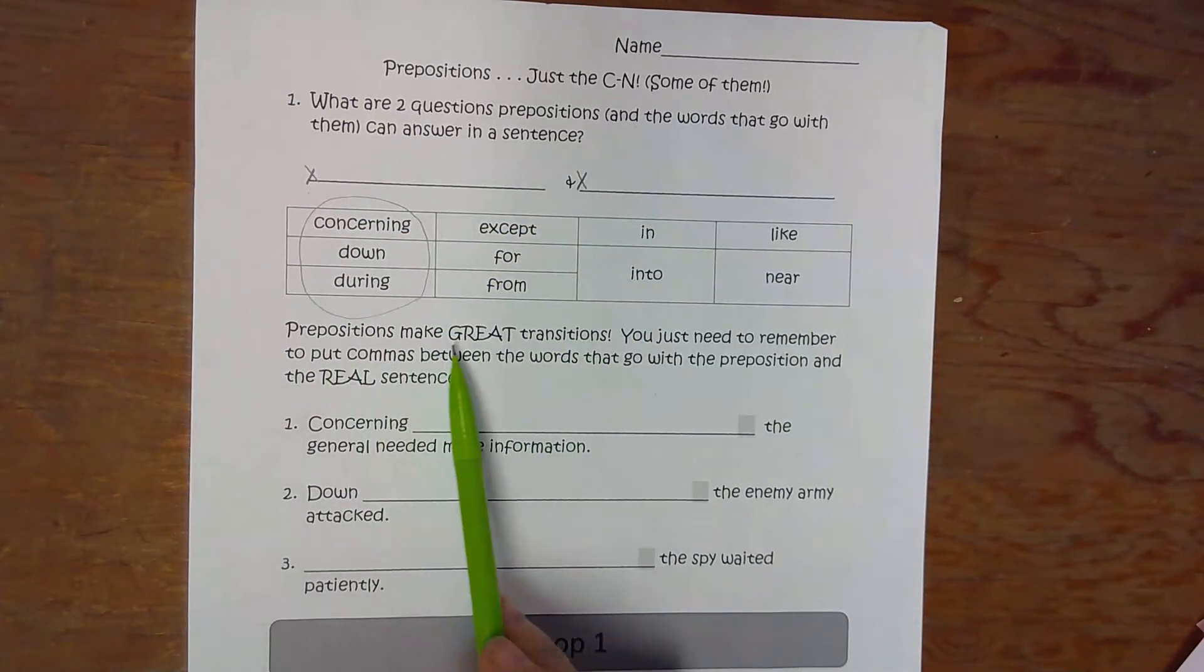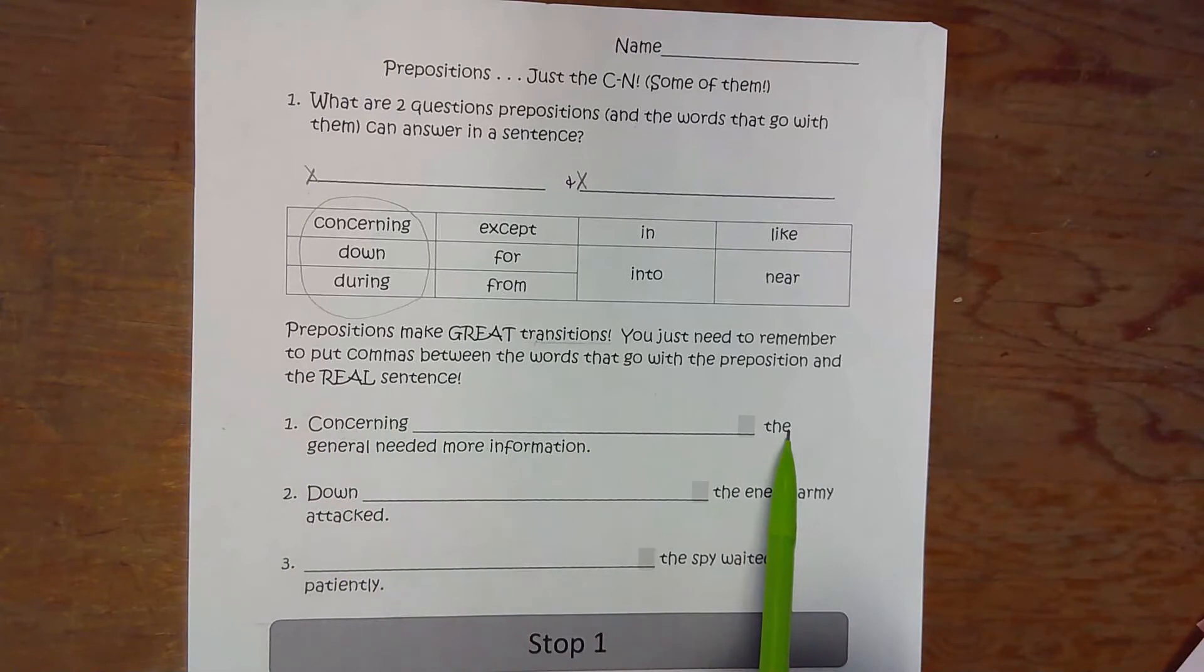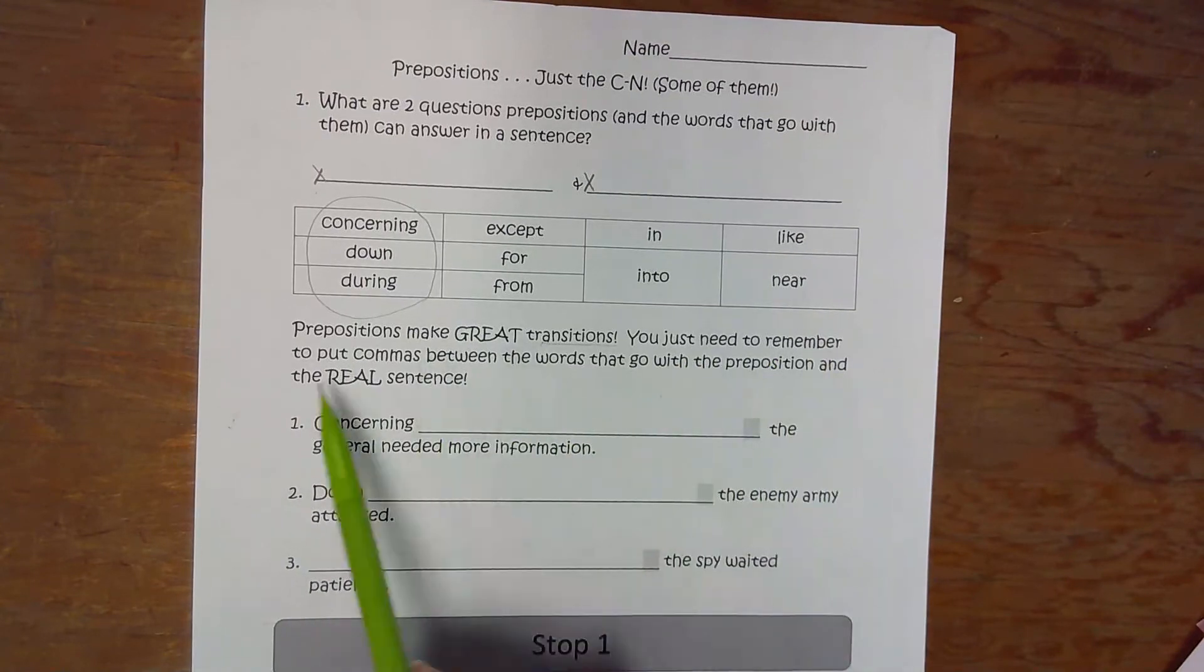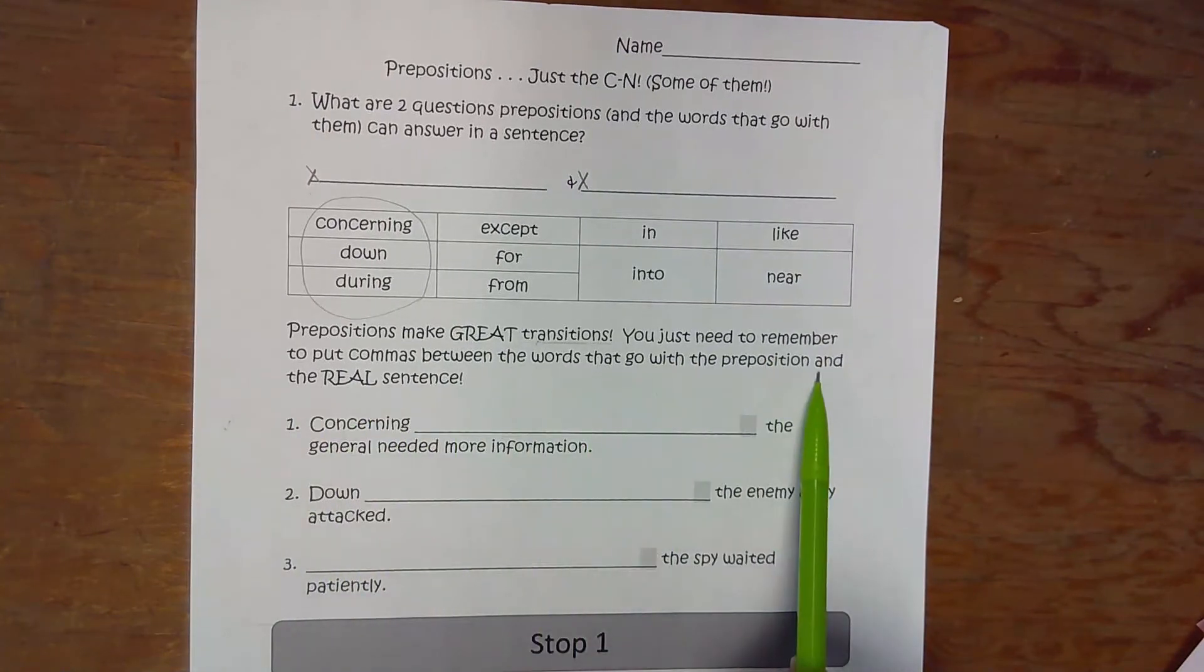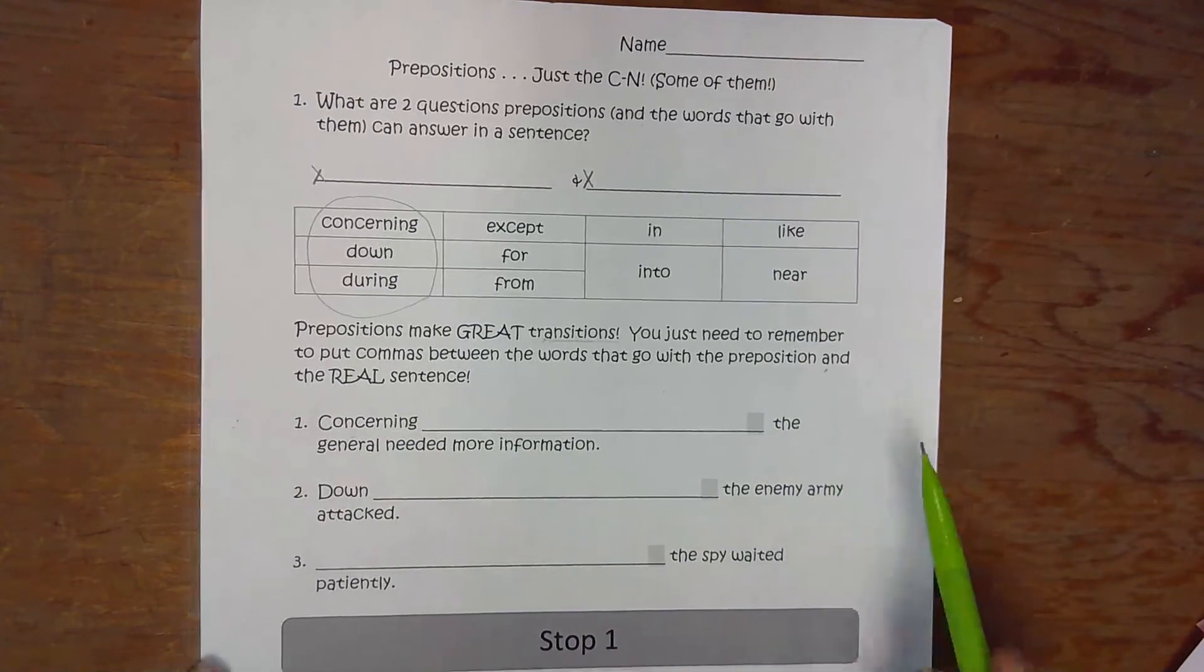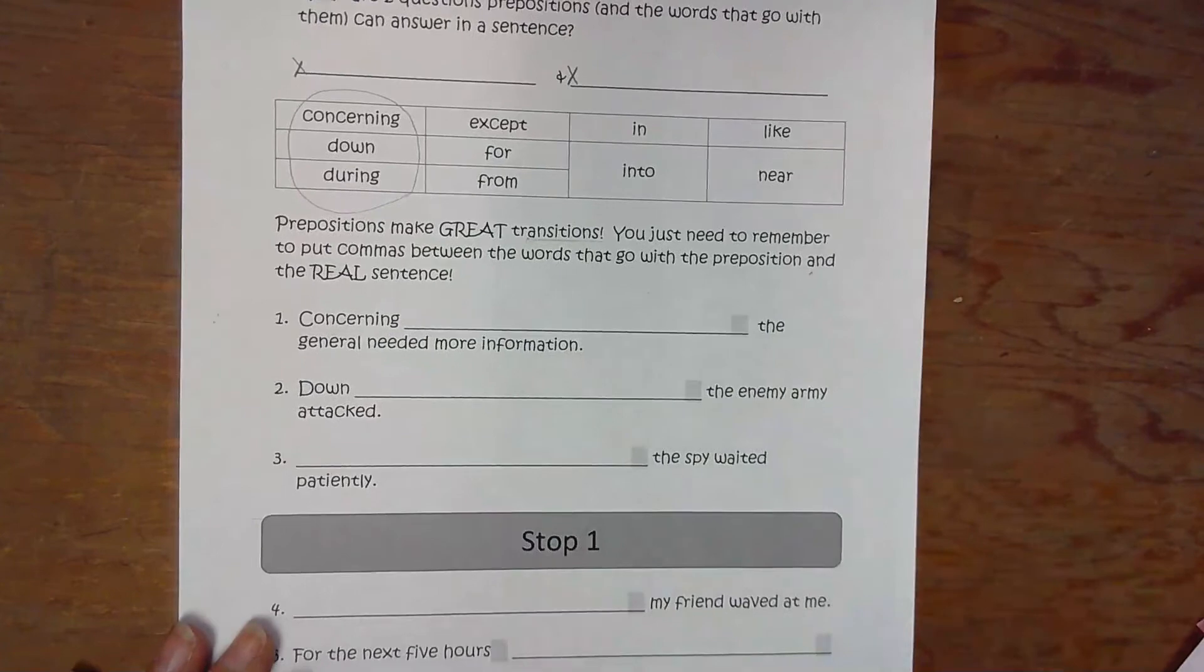A reminder: prepositions make great transitions. That means they go at the beginning of a sentence to hook it to what came before and to be sure the main idea continues on. You just need to remember to put commas between the words that go with the preposition—that's called the prepositional phrase—and the real sentence. I've given you some reminders on these.